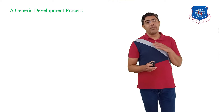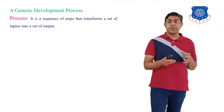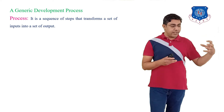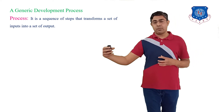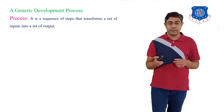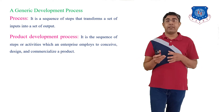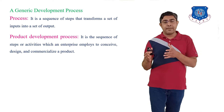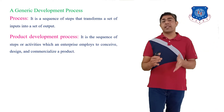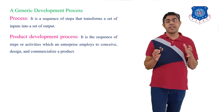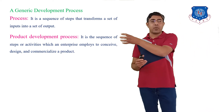Before we learn the Generic Development Process, we learn what is Process. A process is a sequence of steps that transforms a set of inputs into the set of outputs. Next is the Product Development Process — it is a sequence of steps or activities which an enterprise employs to conceive, design, and commercialize a product. It covers all steps required from input to the final launching of a product in the market.